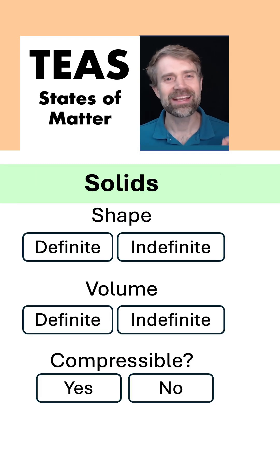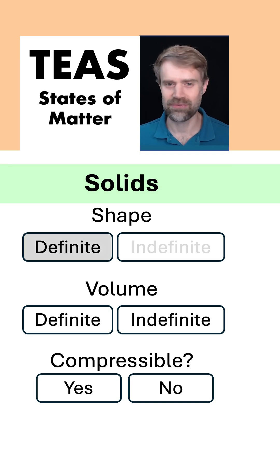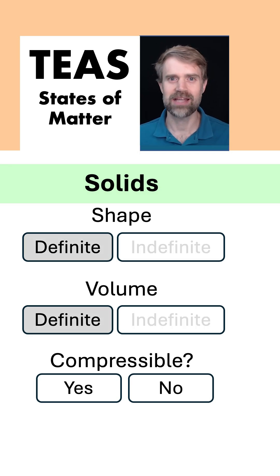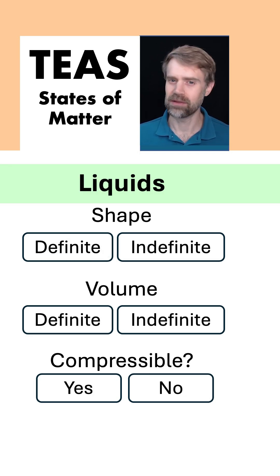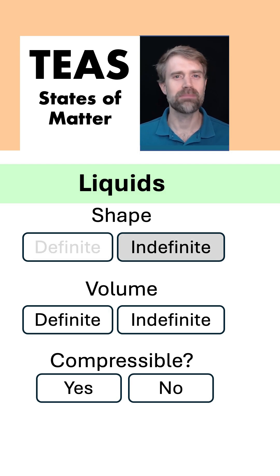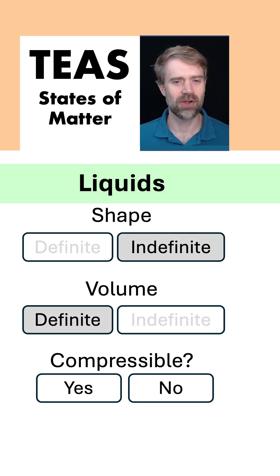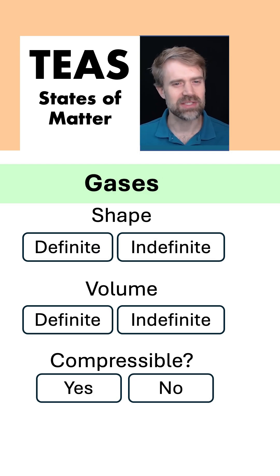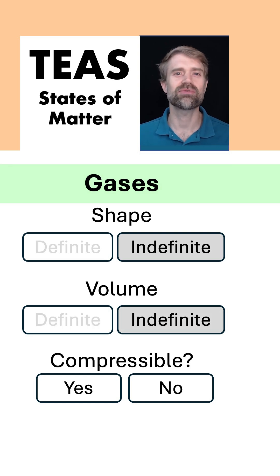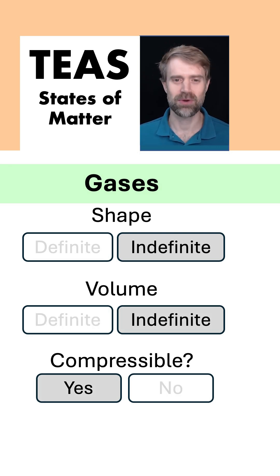Let's review. Characteristics of solids: definite shape, definite volume, not compressible. Liquids: indefinite shape, definite volume, not compressible. And gases: indefinite shape, indefinite volume, and yes — compressible.